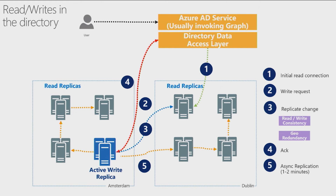The implication for viewers is that if there was another user being served from a read replica in Amsterdam who looks at the directory one second after the initial user made the write, they may not see that write until another minute or two has passed. For customers designing two applications that are reading and writing independently to the directory, be mindful of this replication delay in your application design — if one application is writing and another is reading with different application IDs, there might be a minute or two of delay between what one application writes and what the other reads.